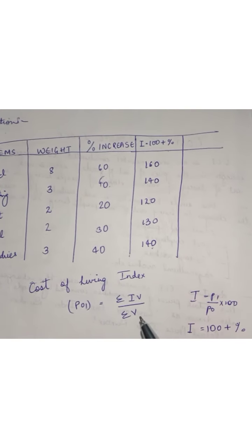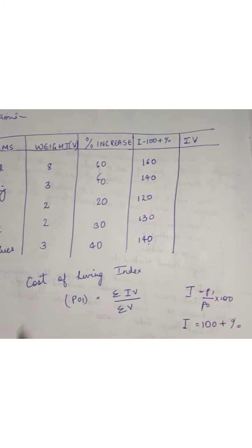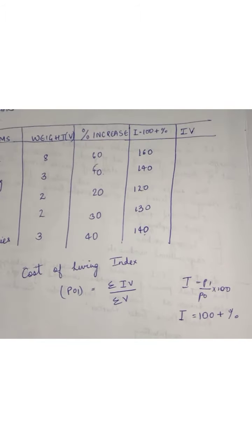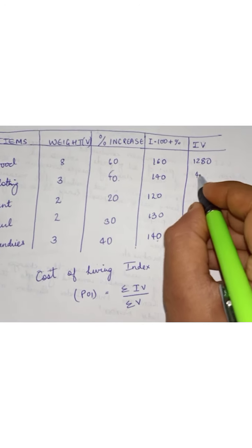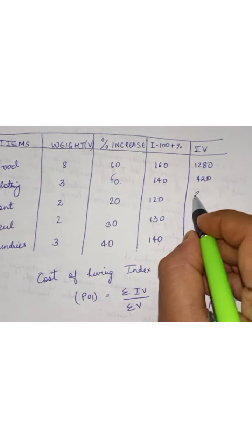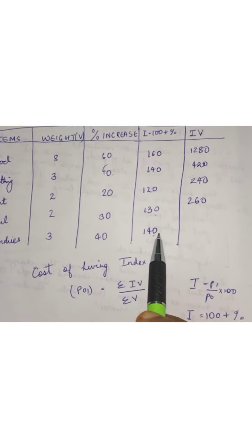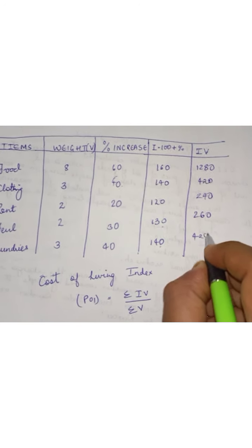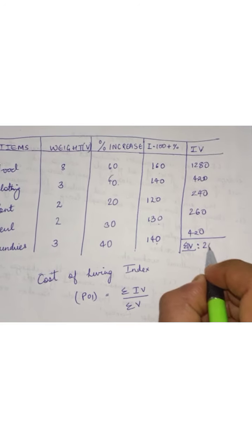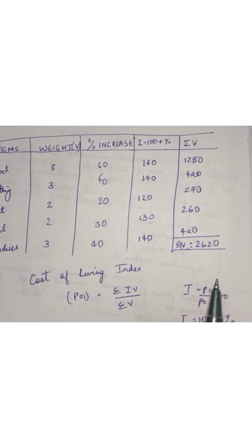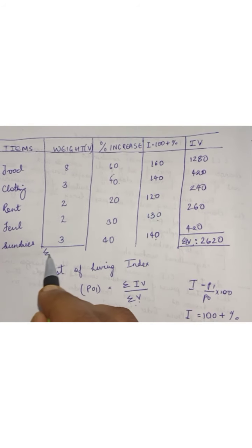Calculating I: 60 + 100 = 160, 40 + 100 = 140, 20 + 100 = 120, 130, and 140. Weight V is given. Now computing I×V: 160 × 8 = 1280, 140 × 3 = 420, 120 × 2 = 240, 130 × 2 = 260, and 140 × 3 = 420. The question asks us to compute the consumer price index for the year 2015 with 2012 as the reference year, and we sum up V as well.